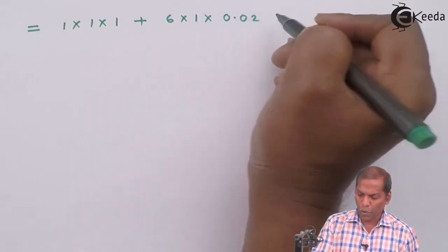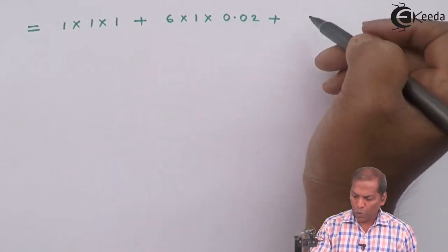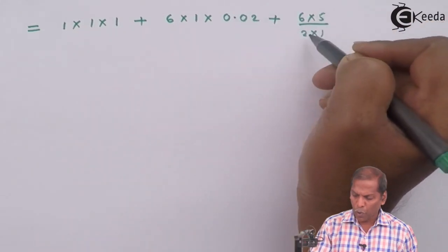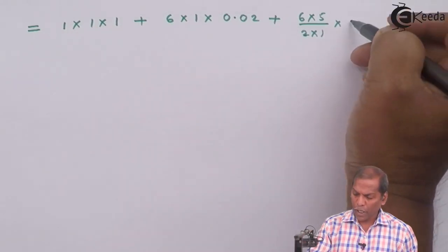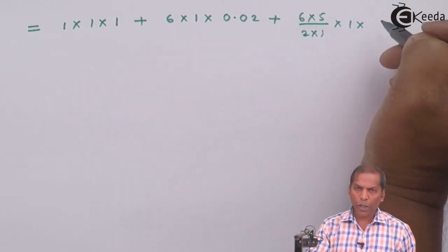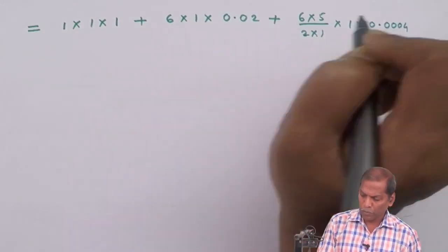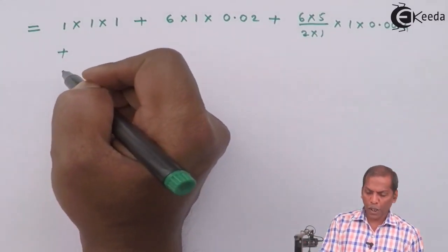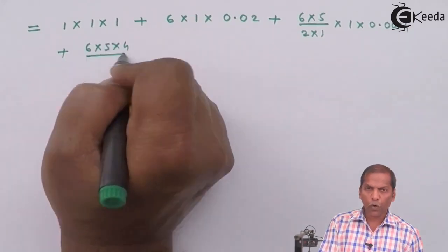(6C2) that is 6 into 5 upon 2 into 1 into (1)^4 that gives 1 and (0.02)^2 gives 0.0004, plus